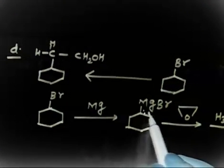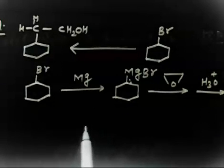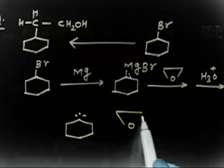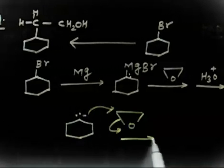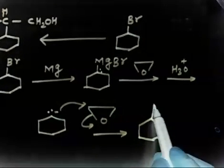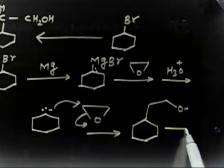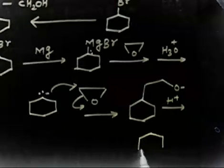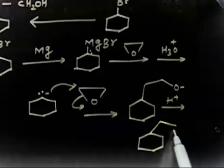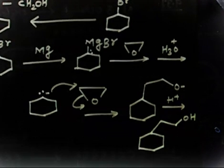There is a lone pair (minus charge) on the Grignard carbanion; it attacks ethylene oxide, which opens up giving an alkoxide with one extra carbon. After hydrolysis (H₃O⁺), you get the desired product: cyclohexyl–CH₂CH₂OH, which is 2-cyclohexylethanol. To increase by two carbons, always use ethylene oxide (CH₂–O–CH₂).